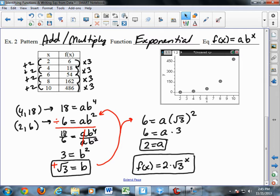So when I divide, 18 divided by 6 gives me 3. a b to the 4th divided by a b squared, a's cancel out. I subtract the exponents, and I get 3 equals b squared, or the square root of 3 equals b.